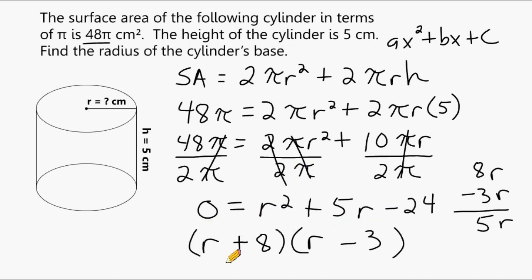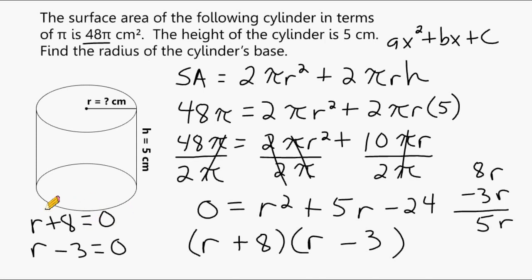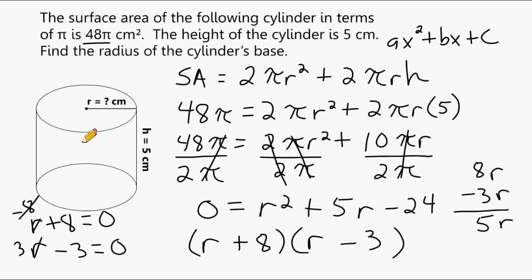Now we set each factor equal to zero: r plus 8 equals 0 gives r equals negative 8, and r minus 3 equals 0 gives r equals positive 3. Since the radius cannot be negative, we eliminate negative 8 as a possible solution. Therefore, the radius of our cylinder is equal to 3 centimeters.